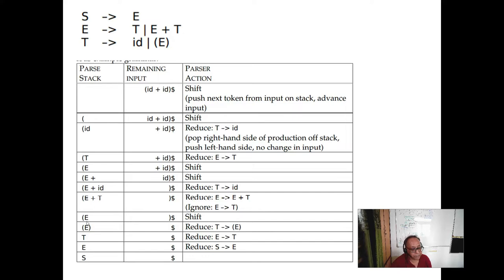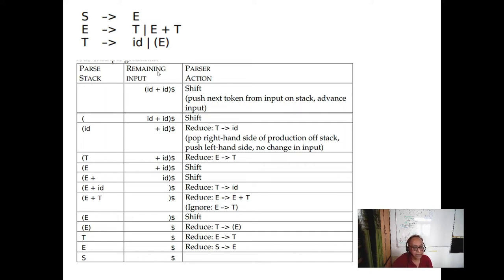We got E plus T reduced to E. Then shift again, reduce similarly, push T then E, and then E to S — the start variable. In bottom-up parsing, at the end your start variable will be on the stack. Remember in top-down parsing you put the start variable at the beginning. The stack is only used for manipulation — the input string never fully goes into the stack in either case. The key difference is: bottom-up parsing starts with an empty stack.